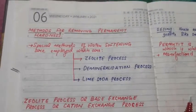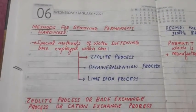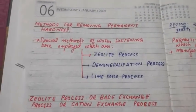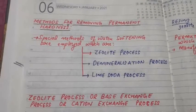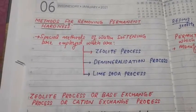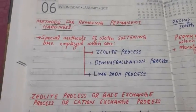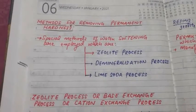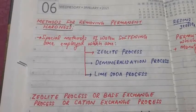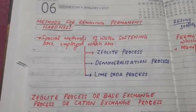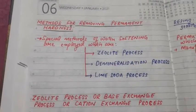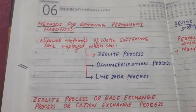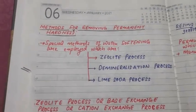In this lecture, we will talk about the methods for removing permanent hardness. Permanent hardness is caused due to sulfate, chloride and nitrate of multivalent cations.